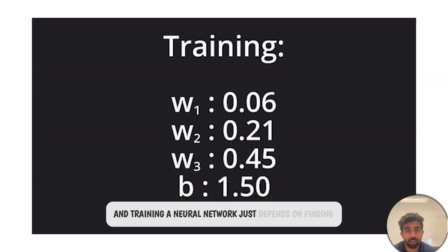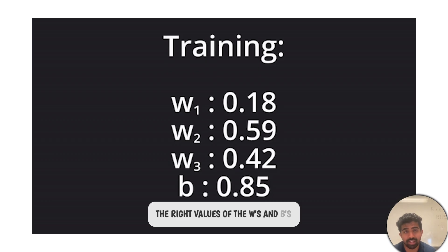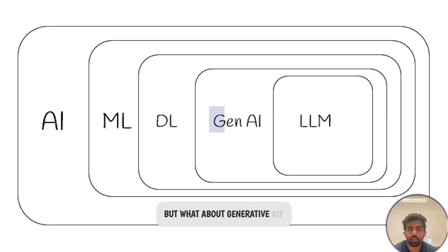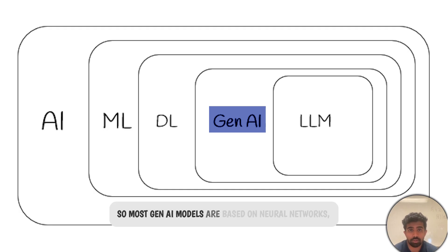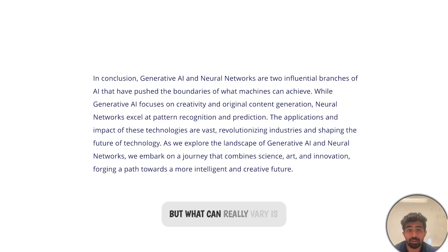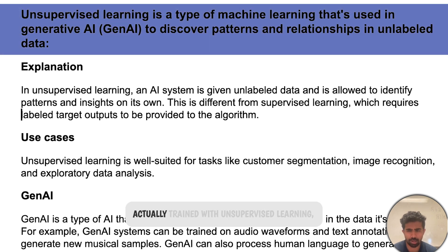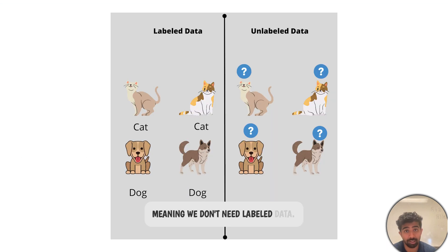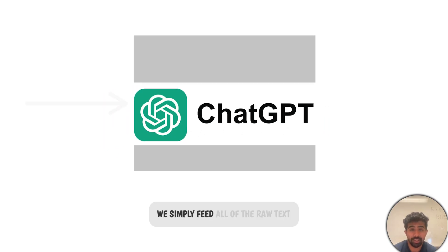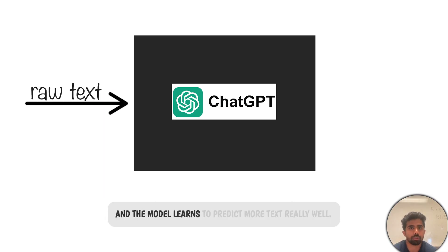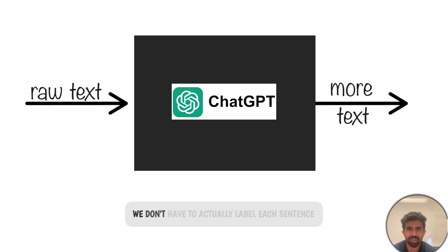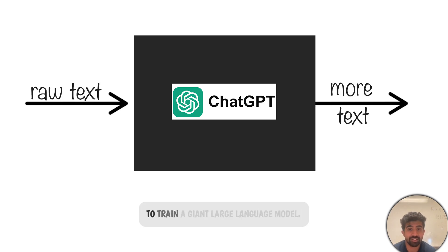Training a neural network comes down to finding the right values of the weights W and biases B to maximize the model's accuracy. Most generative AI models are based on neural networks, but what can vary is the architecture and structure. Most Gen AI models are actually trained with unsupervised learning, meaning we don't need labeled data. The simplest example is ChatGPT — we feed all the raw text from the internet into the model and the model learns to predict more text really well. We don't have to label each sentence or paragraph with additional info, which means not much data pre-processing is needed to train a large language model. It's a miracle that this even works.